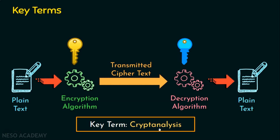The next key term is cryptanalysis, also called code breaking. Assume an attacker does not know the encryption algorithm used to generate the ciphertext and has no chance of knowing the key. The attacker will still try to find the plaintext by breaking or decoding the ciphertext. This activity is not legitimate — it is code breaking because the attacker does not know the key. The attacker's main intention is to find the key, because knowing the key means knowing the entire communication.